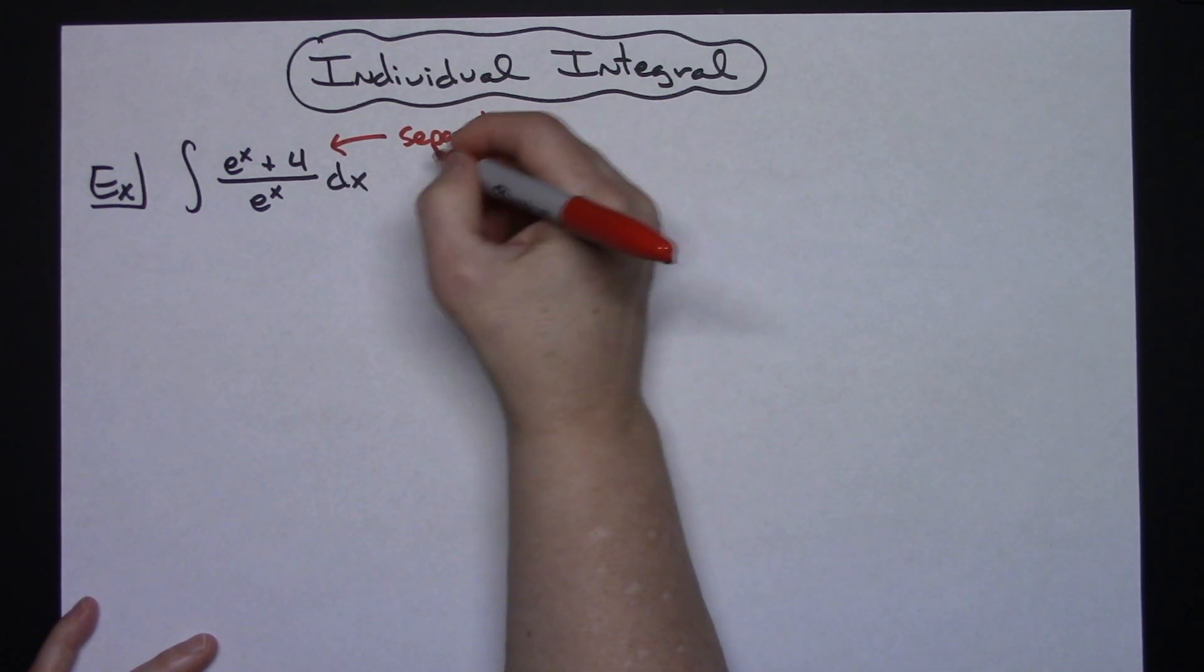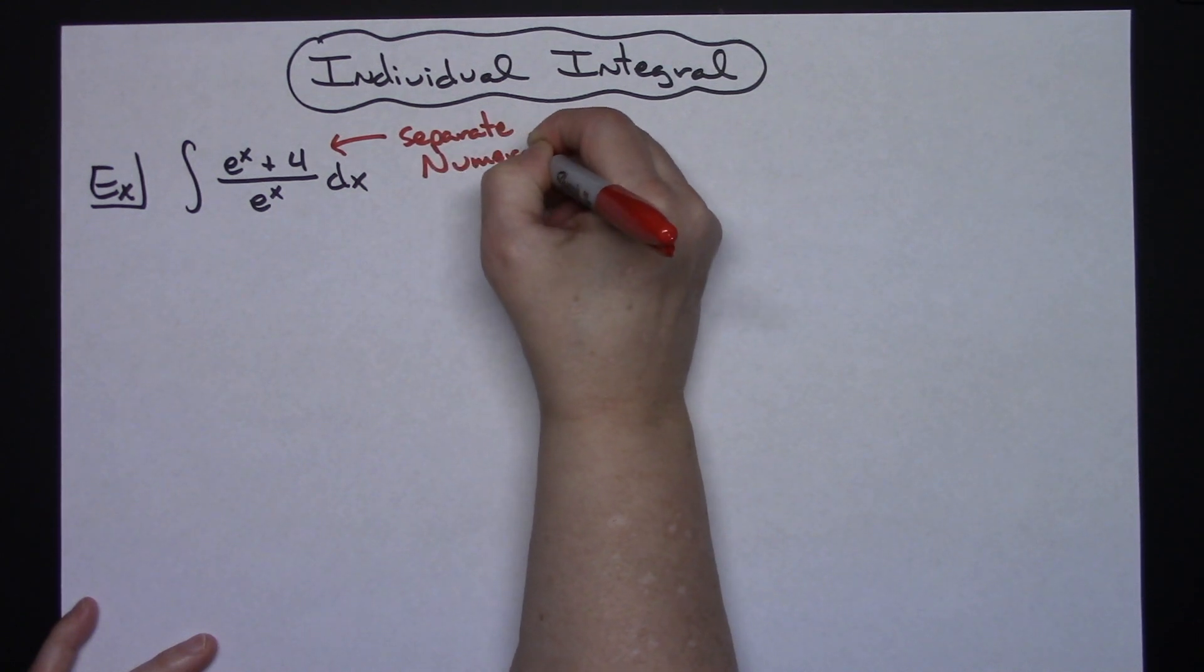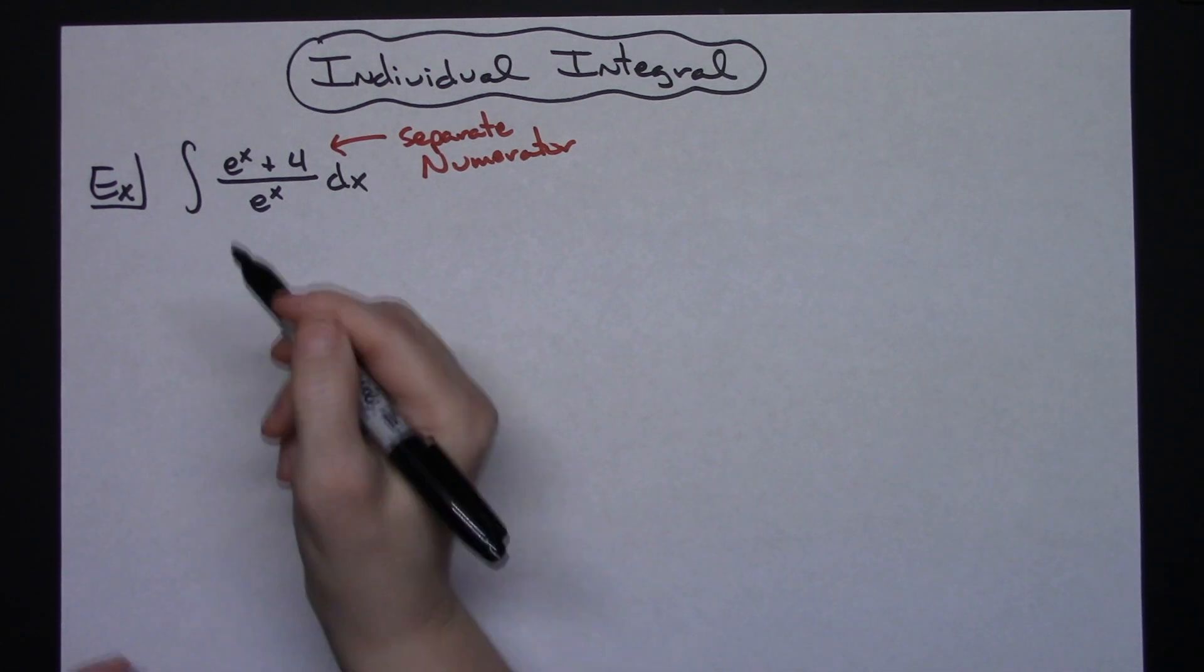A good approach here is to separate that numerator. You can break that up into two different integral problems and it's going to make it a whole lot easier. So that's what I'm going to do.